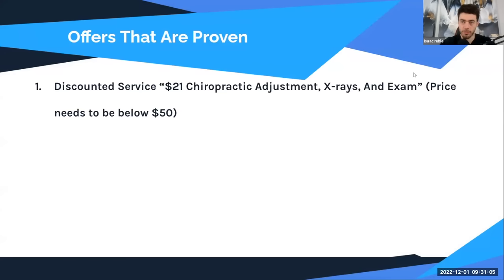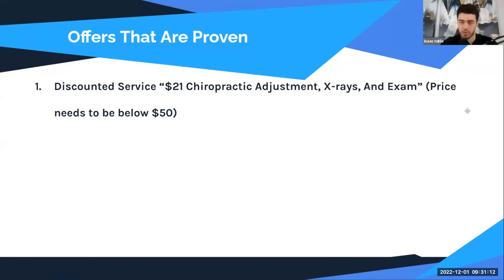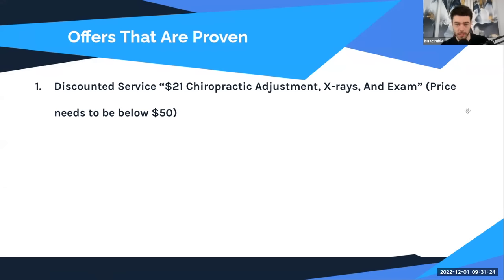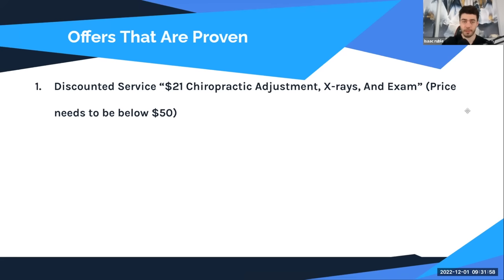It's your job when you close a client to push them into a good offer. If they won't go with a good offer, you should probably refund them and move on — there are plenty of other clients. Let me go through the proven offers. First: discount service. For example, a $21 chiropractic adjustment with x-rays and exam. For the discounted service offer, the price needs to be below $50 for consistent performance, though in some good markets you can go up to around $80.